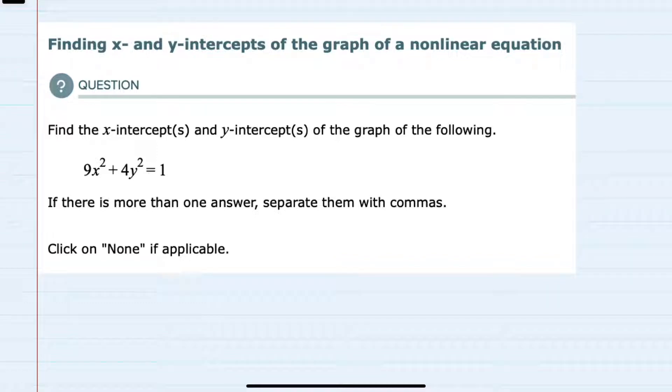In this video I'll be helping you with the ALEKS problem type called finding x and y intercepts of the graph of a nonlinear equation. Here we're asked to find the intercepts of the graph 9x squared plus 4y squared equals 1.